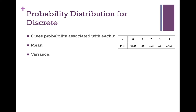In this case, we're looking at the number of girls in a family of four. So x could be zero girls, one girl, two girls, three girls, or four girls. Below that is the probability — for example, there's a 0.0625 probability of having zero girls, a 0.25 probability of having one girl, and so on.